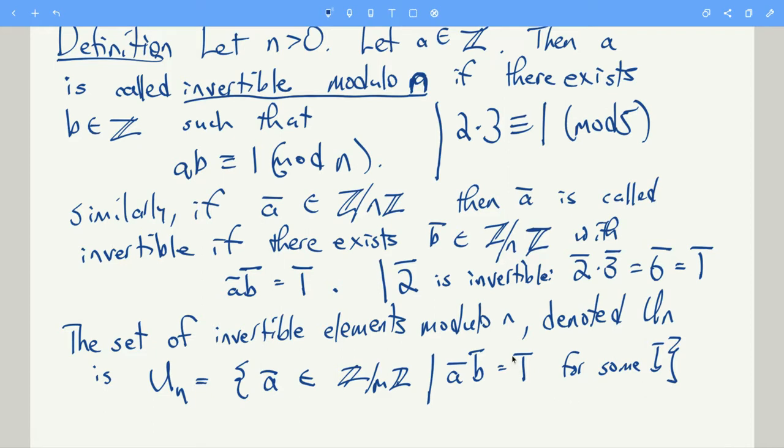So for example, U5. U5, what is that? That's the congruence class of 1, the congruence class of 2, the congruence class of 3, and the congruence class of 4.